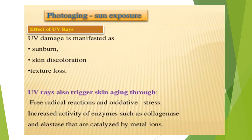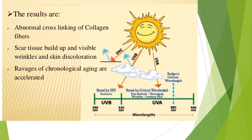Photo-aging from sun exposure causes UV damage manifested by sunburn, skin discoloration, and texture loss. UV rays also trigger skin aging through free radical reactions, causing wrinkles and spots via oxidative stress. This increases the activity of enzymes such as collagenase and elastase, which are catalyzed by beta-lyase, causing skin aging. Effects from UV radiation include skin damage, discoloration, texture loss, sunburn, and hyperpigmentation. Environmental factors such as chemical use also cause abnormal cross-linking of collagen fibers.